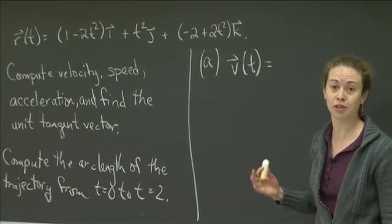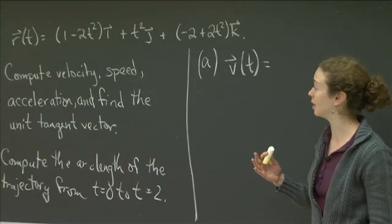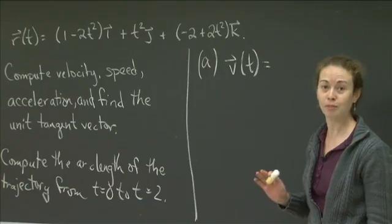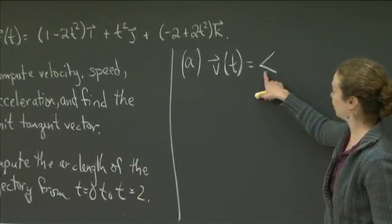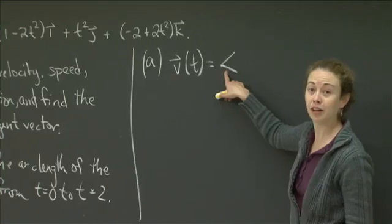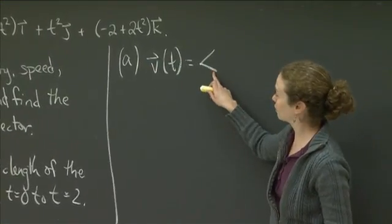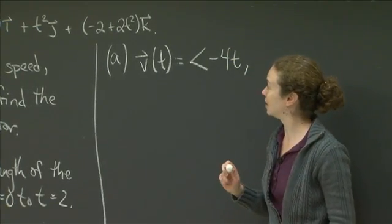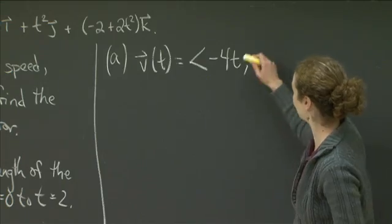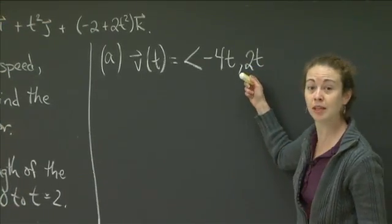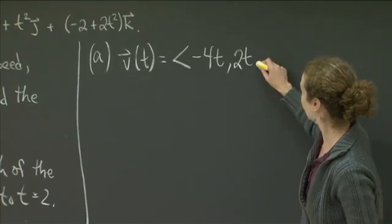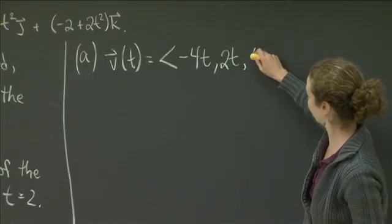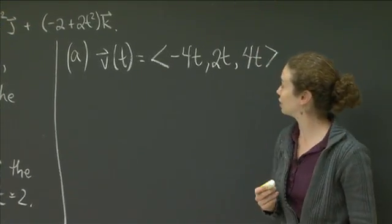And now I'm going to write it in the shorthand notation that you've seen with the brackets to denote that it's not a point, but it's a vector. So this is what you've seen to denote a vector rather than a point. So the derivative with respect to t of the first component is just -4t. The derivative with respect to t of the second component is just 2t, because we had t². So when we take its derivative, we just get 2t. And the third component was -2 + 2t². So when I take its derivative, I get a 4t. So that is actually v(t).